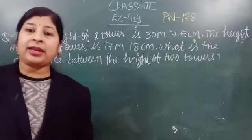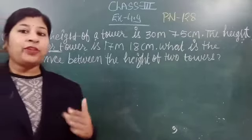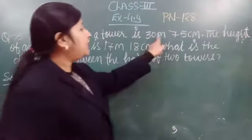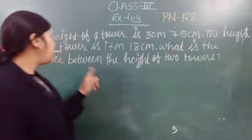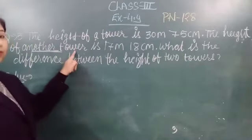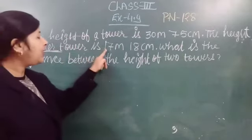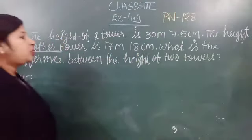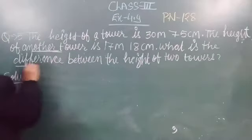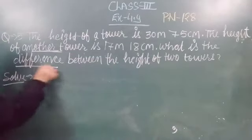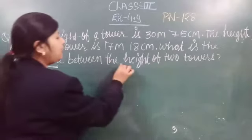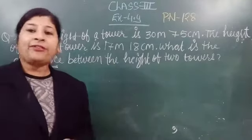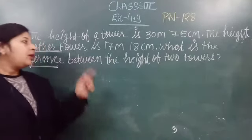So you have two towers, and we need to find the difference between the heights of these two towers. The height of the first tower is 30 meter and 75 centimeter, and the second one has a height of 70 meter and 80 centimeter. What is the difference? How can we find that difference? Okay, that is the question.